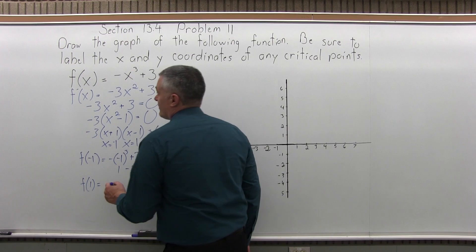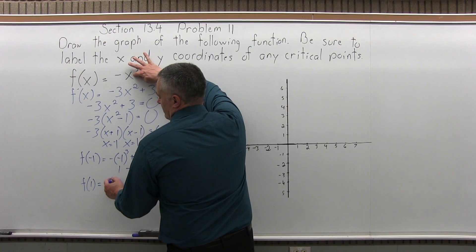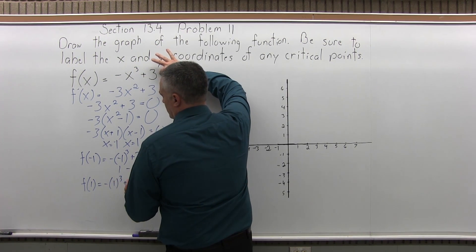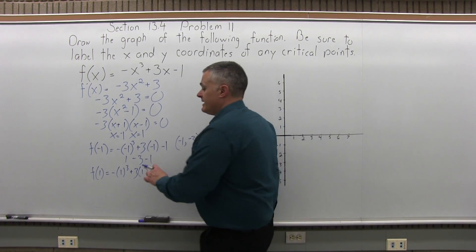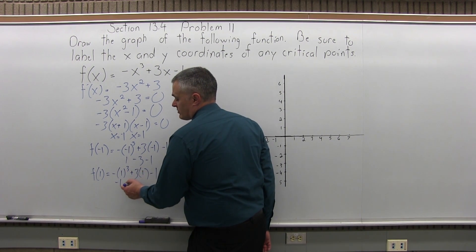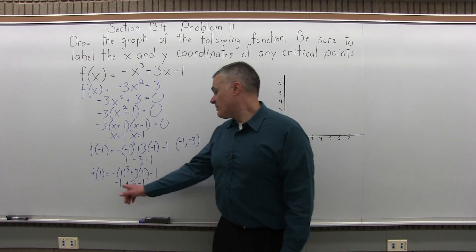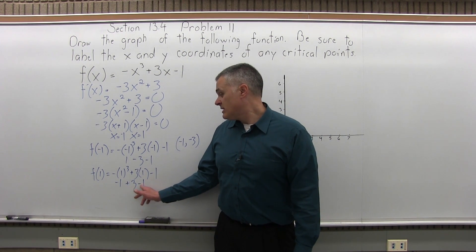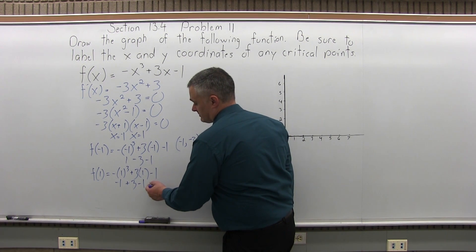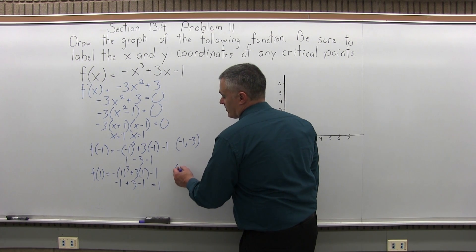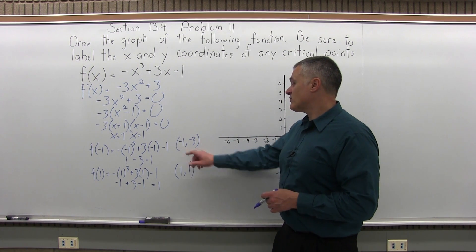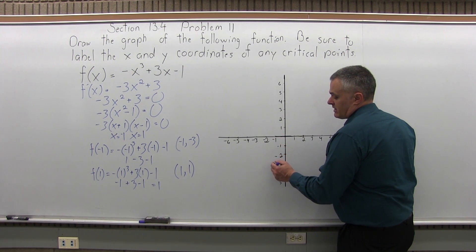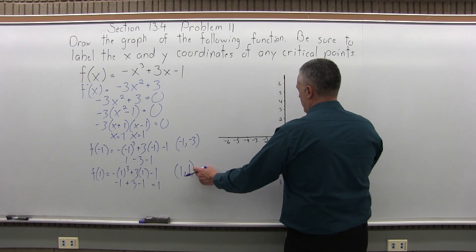Do the negative 1 first. f of negative 1: we have negative times negative 1 cubed, plus 3 times negative 1, minus 1. Pay attention to the signs — negative 1 cubed is minus 1, but there's a minus in front, so it becomes positive 1. Then 3 times negative 1 is minus 3, and there's a minus 1 at the end. Positive 1 and negative 1 cancel, leaving negative 3. So the height at x equals negative 1 comes out to negative 3.